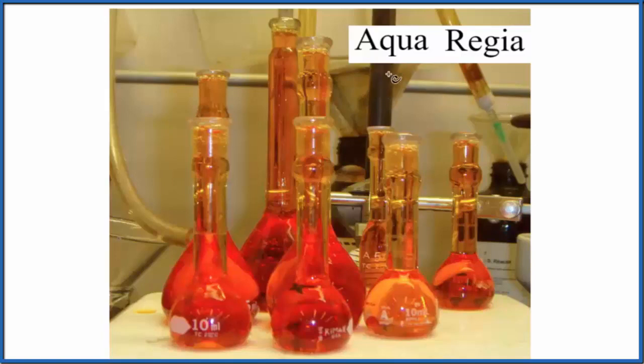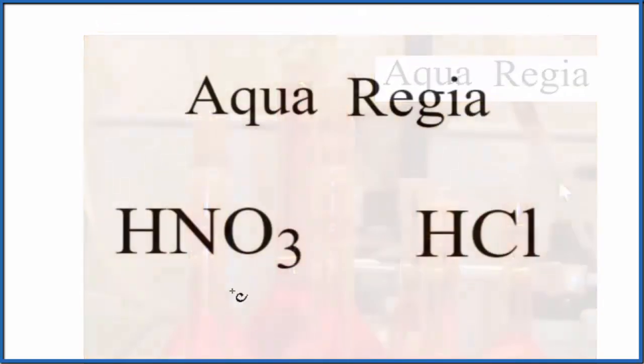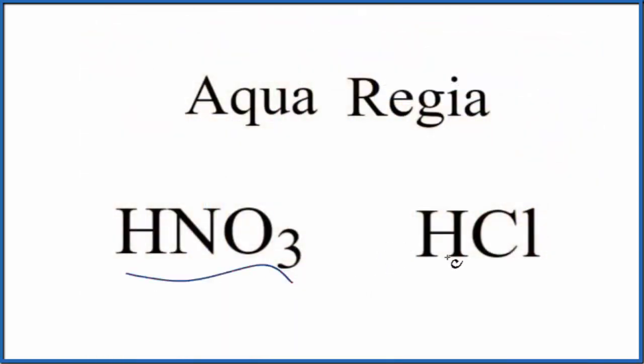So the question is, what is the formula of aqua regia? It's actually a mixture of two strong acids, HNO3, that's nitric acid, and HCl, hydrochloric acid. And it's in a ratio of one to three.